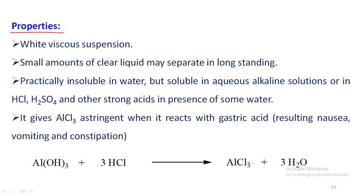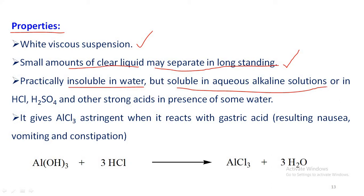The properties of aluminum hydroxide gel or suspension: it is a white viscous suspension. Small amounts of clear liquid may separate on long standing. It is practically insoluble in water, but soluble in aqueous alkaline solutions or in HCl solution, sulfuric acid, and other strong acids in the presence of some water.